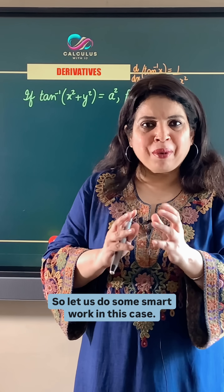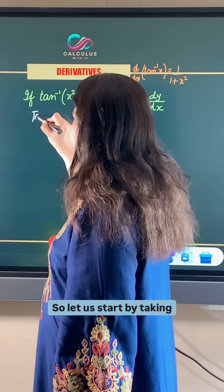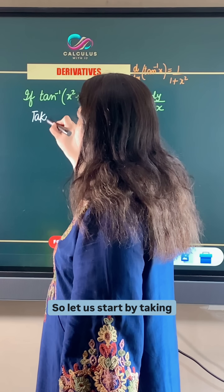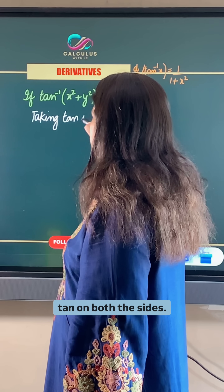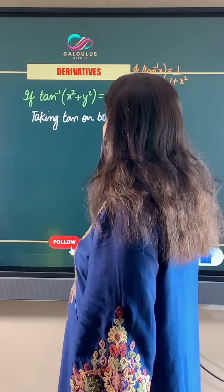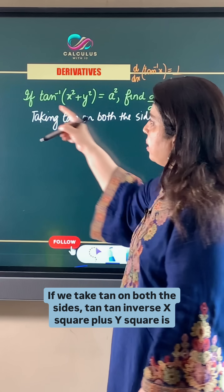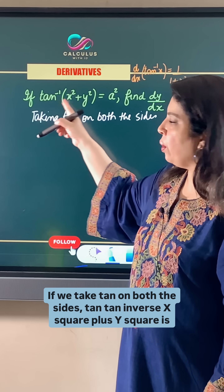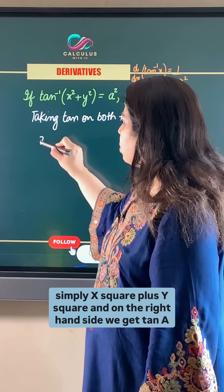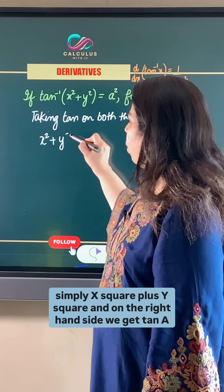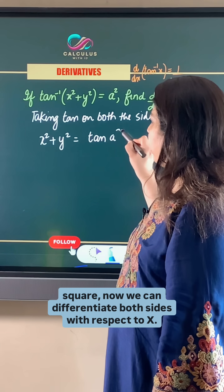So let us do some smart work in this case. Let us start by taking tan on both sides. tan of tan inverse (x² + y²) is simply (x² + y²), and on the right-hand side we get tan(a²).